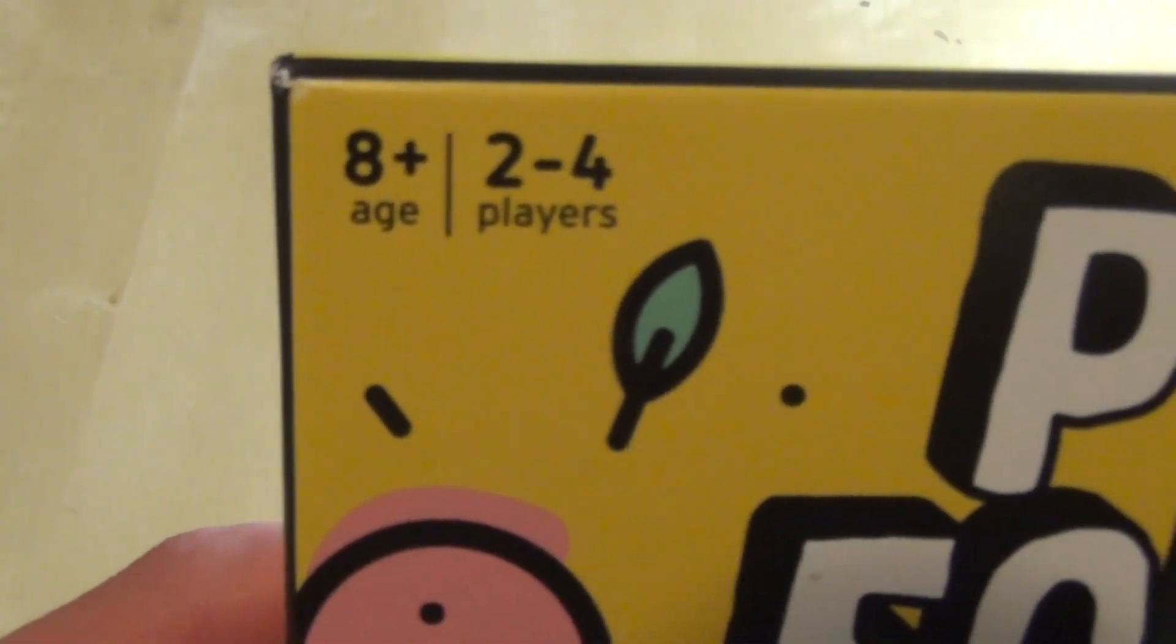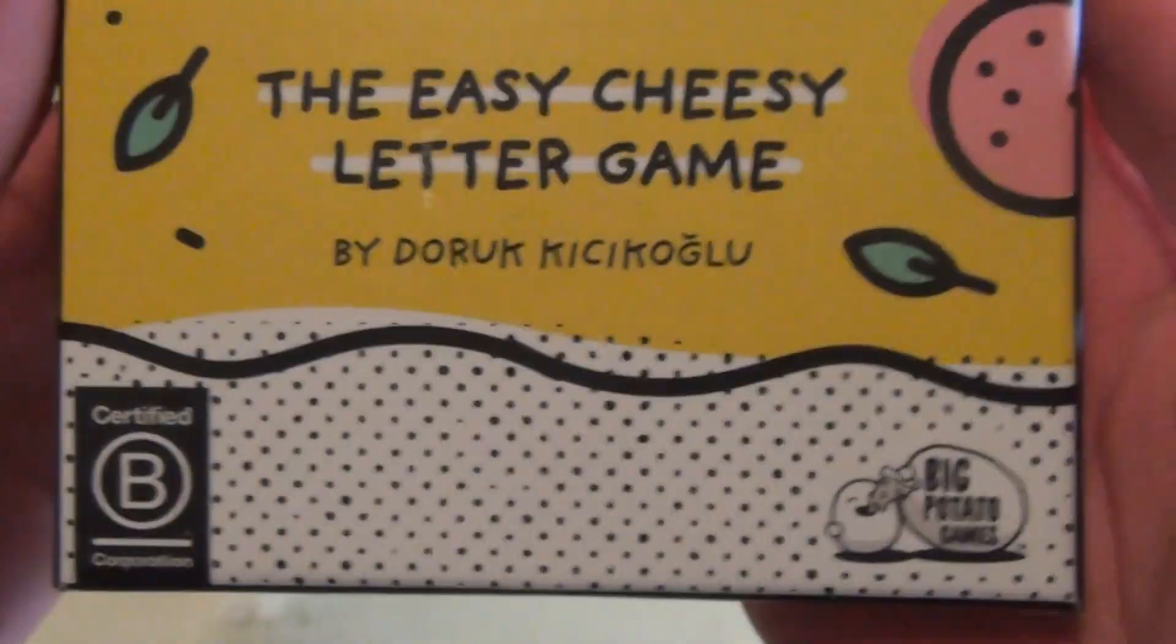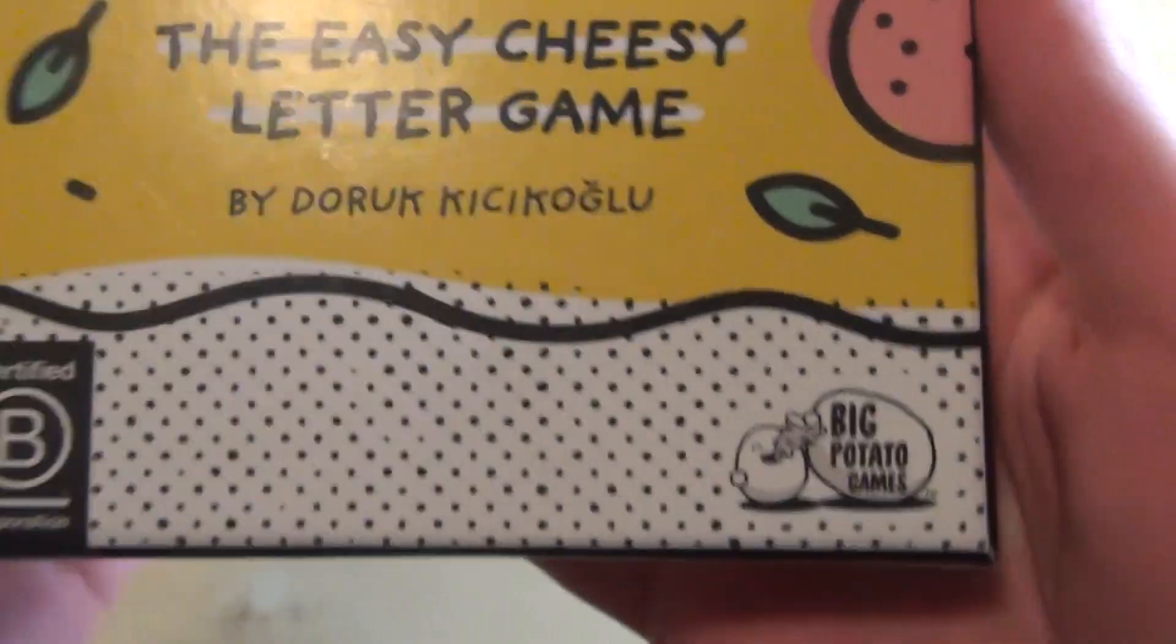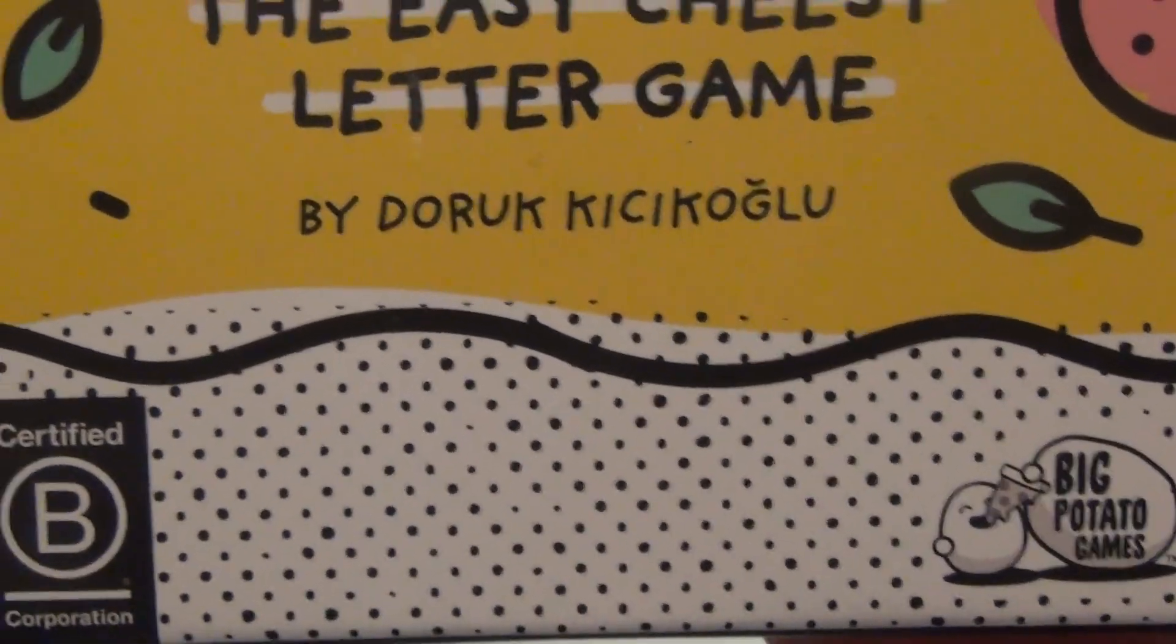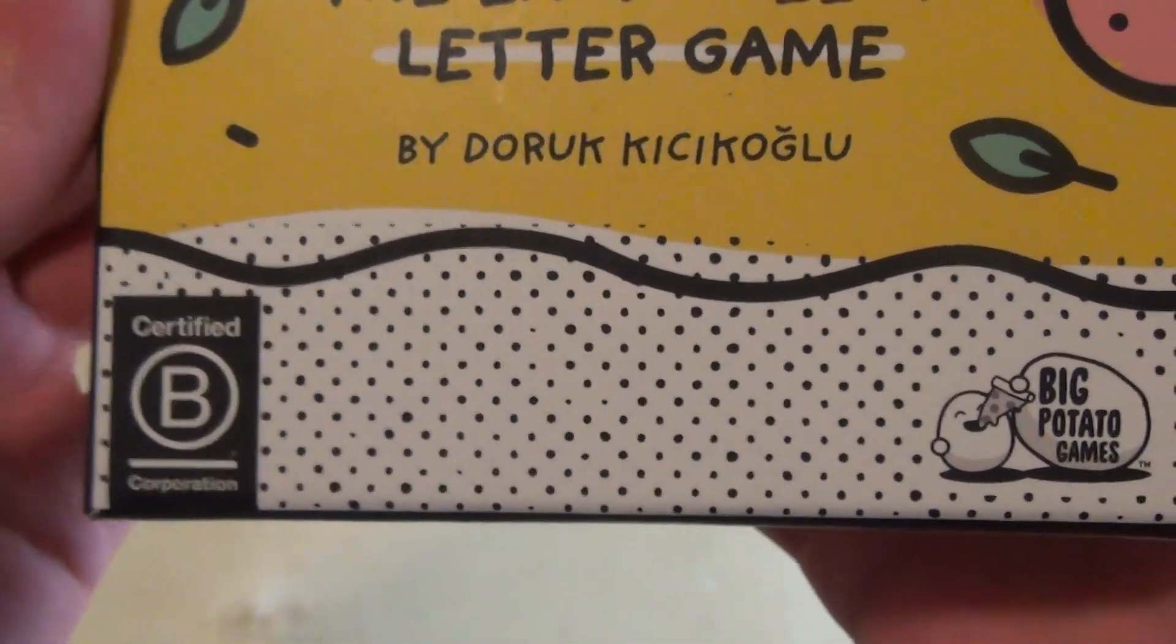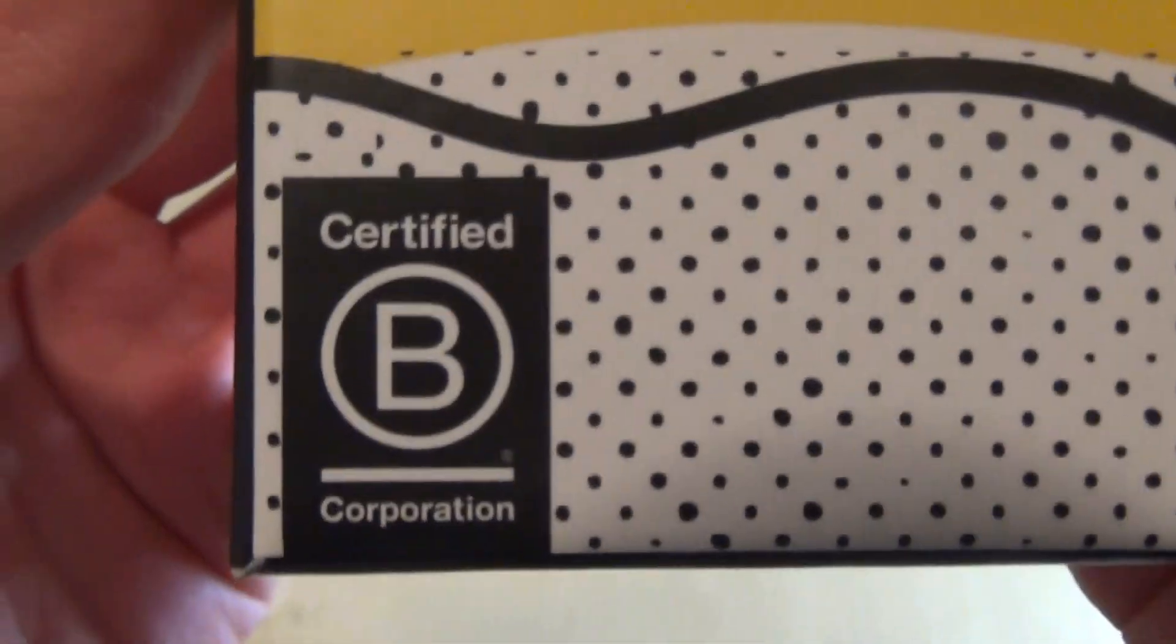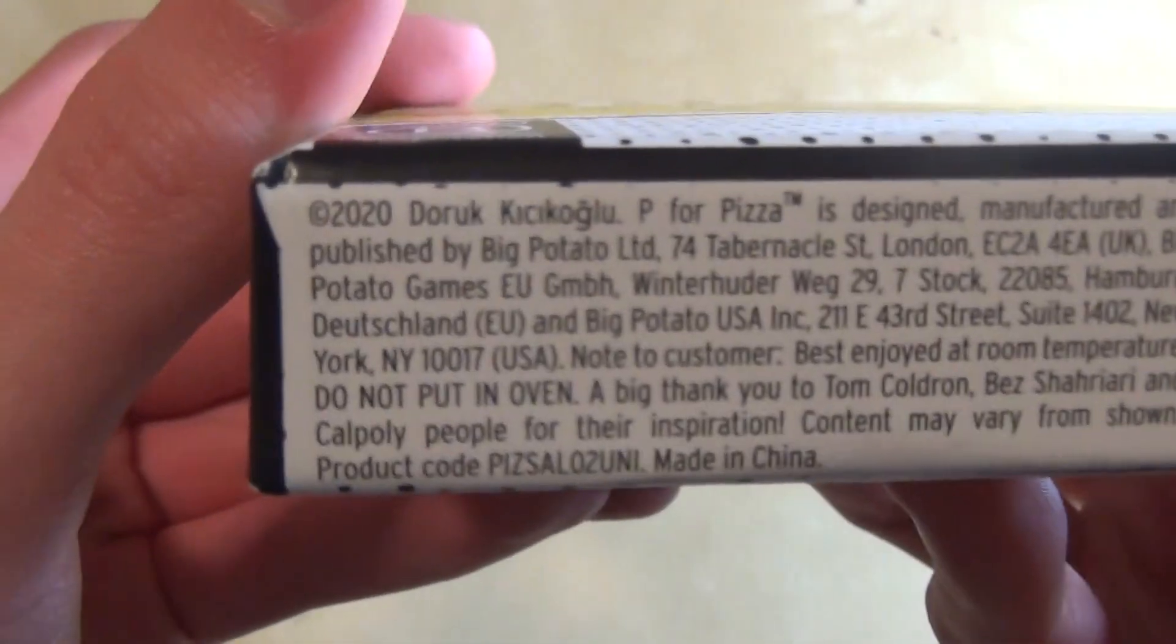It says ages eight and up, two to four players. P for Pizza, plastic free, the easy cheesy letter game by Doruk Kichikoglu - I cannot say that - from Big Potato Games, certified B corporation. So this is a newer version, 2020.